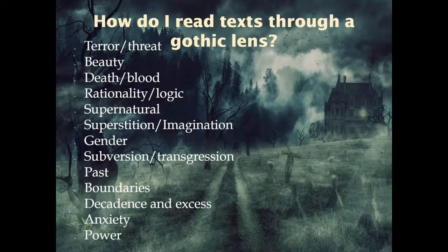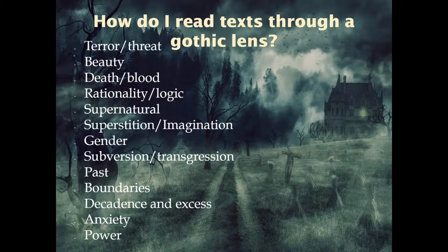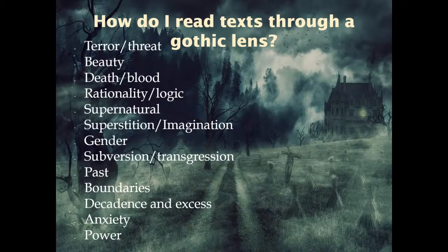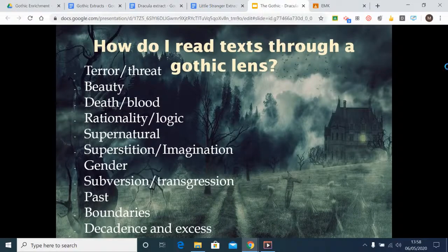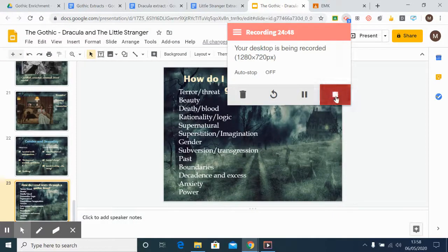I would ask you to definitely read and annotate the extracts from Dracula and The Little Stranger, and a minimum of two from the other extracts as well, so that we have enough between us to explore. As a guide for reading through a gothic lens, look out for: terror and threat, beauty, death, blood, rationality, logic, the supernatural, superstition, gender subversion, transgression, the past, boundaries, decadence, excess, anxiety, and power. The list is by no means exhausted, but just a few things to explore. I look forward to seeing you next week — thank you very much.